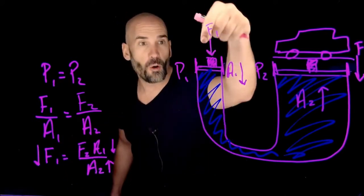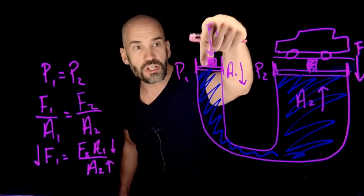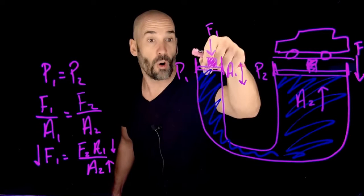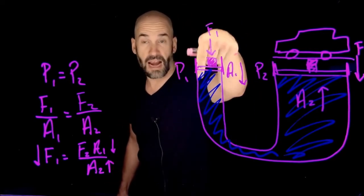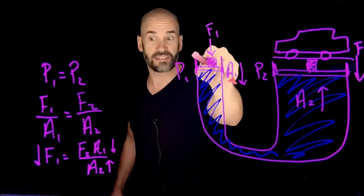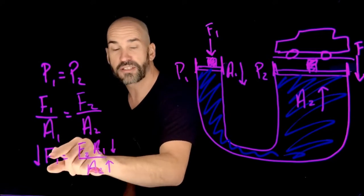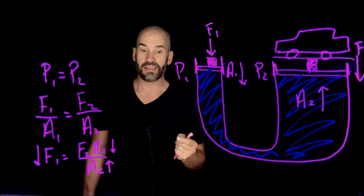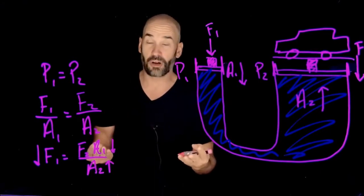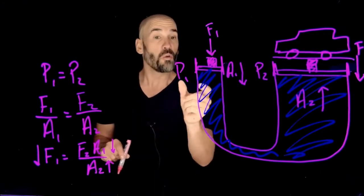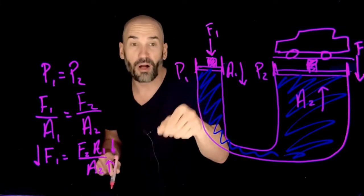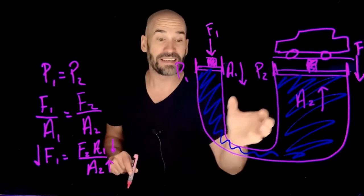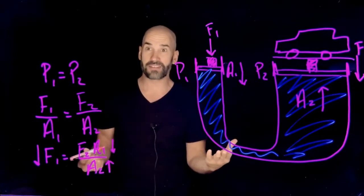And so that means that the force required to push down on here to balance, or if you push a little bit harder than that, to actually raise a Tesla, is going to get smaller and smaller if we just reduce this area and make this area bigger. This is how some hydraulic presses work. This is how we are able to use a relatively small force to lift something with an astronomical mass.